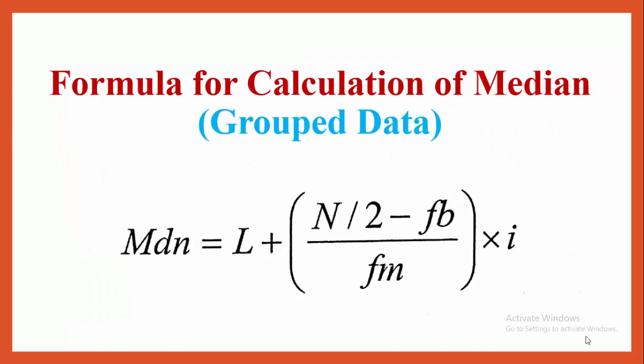Formula for calculation of median when grouped data is given: Median = L + [(N/2 − FB) / FM] × i.